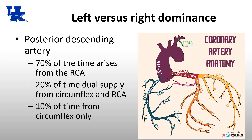The blood supply described is what is generally common in a normal person. Left versus right dominance is determined by where the posterior descending artery arises from. Most of the time — 70% — the PDA arises from the right coronary artery, which is called right dominance. 20% of the time there is dual supply from both the circumflex and RCA, called co-dominant. And 10% of the time the PDA arises from the circumflex only, which is left dominance.